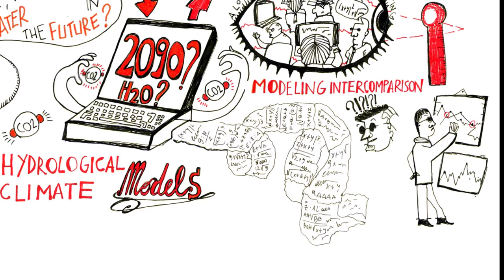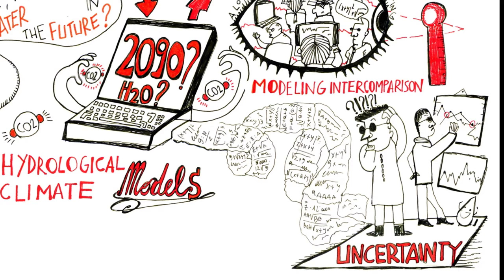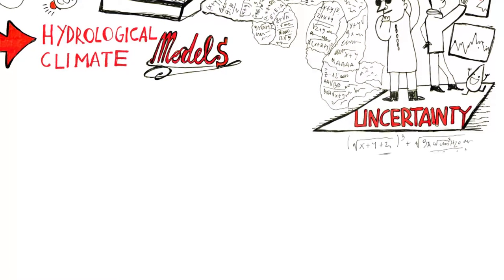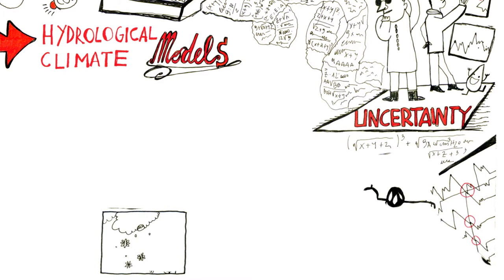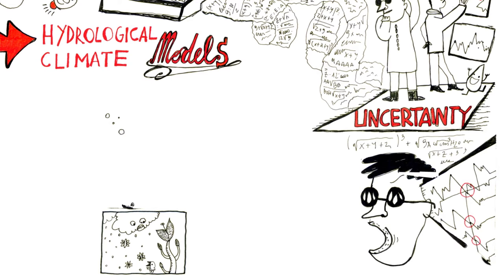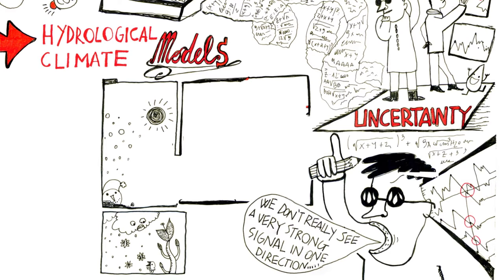Therefore, it's quite important to not just pick out one model and say these are the changes we have to expect, but to really look at the full range and assess statistically whether the changes we see across different models are actually significant. If we look at a global average, we don't see a very strong signal in one direction — there is not a huge drying trend or a wetting trend.